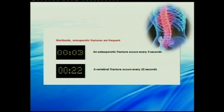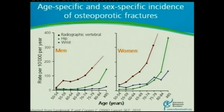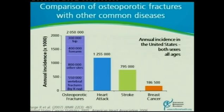The prevalence of fracture is so common that we need to address what causes it and try to prevent it. The lifetime risk after age 50 shows that vertebral fractures are as common, if not more, than hip fractures — and more common than the more feared diseases of breast cancer and prostate cancer. People worry about cancer more than worrying about fracturing their bones. All kinds of fractures increase with age, more so in women, and are more prevalent than heart attacks, stroke, and breast cancer combined.